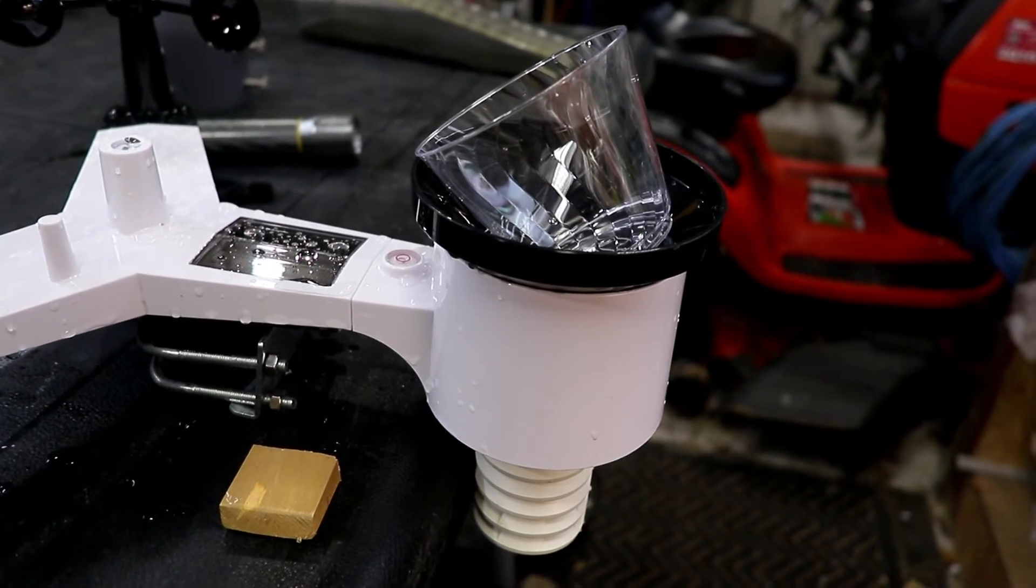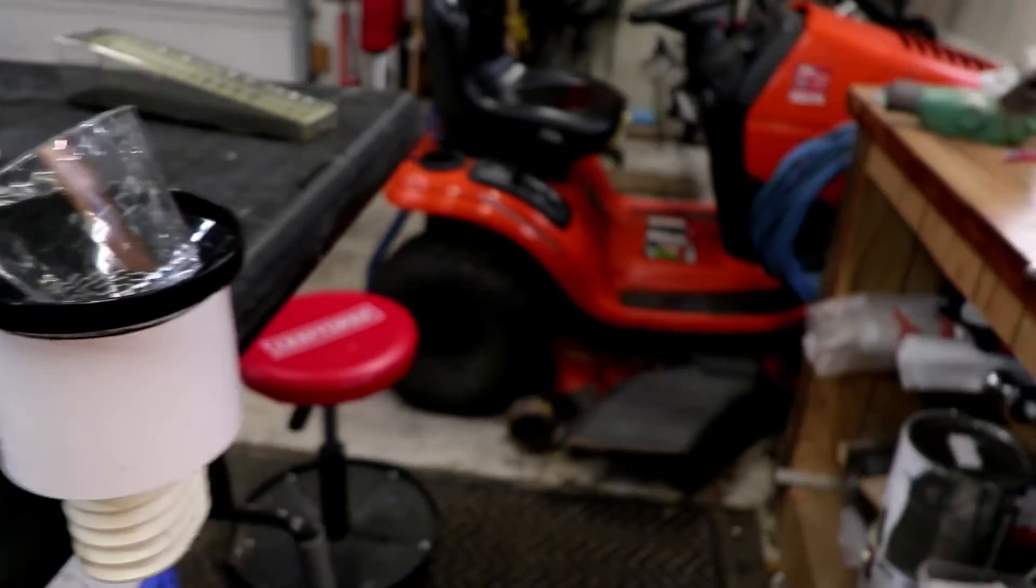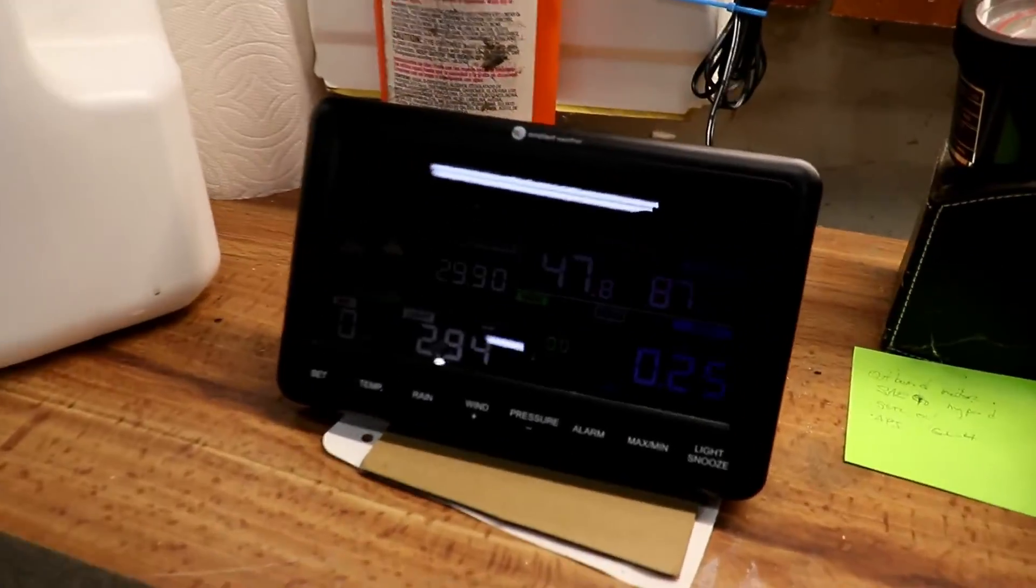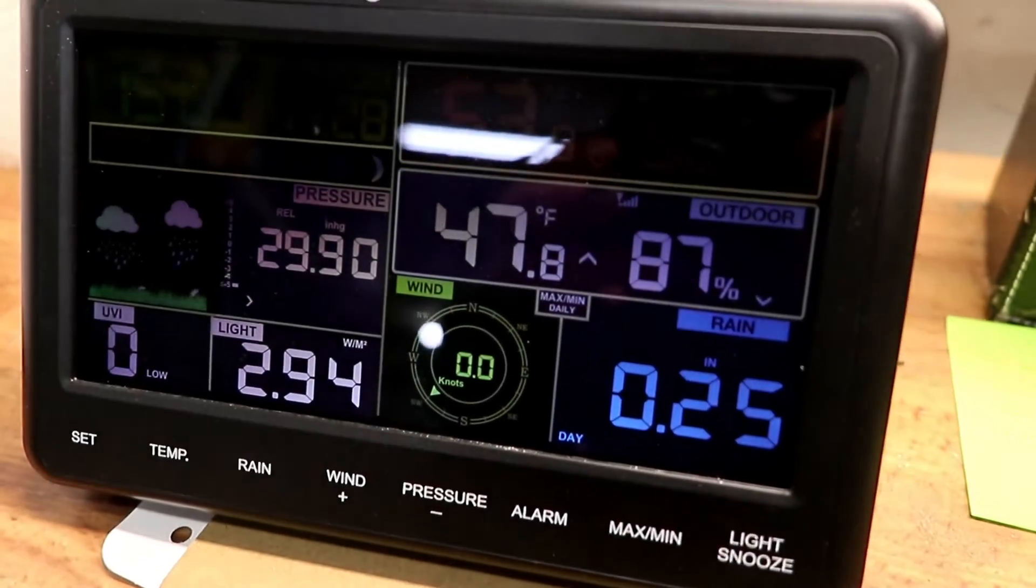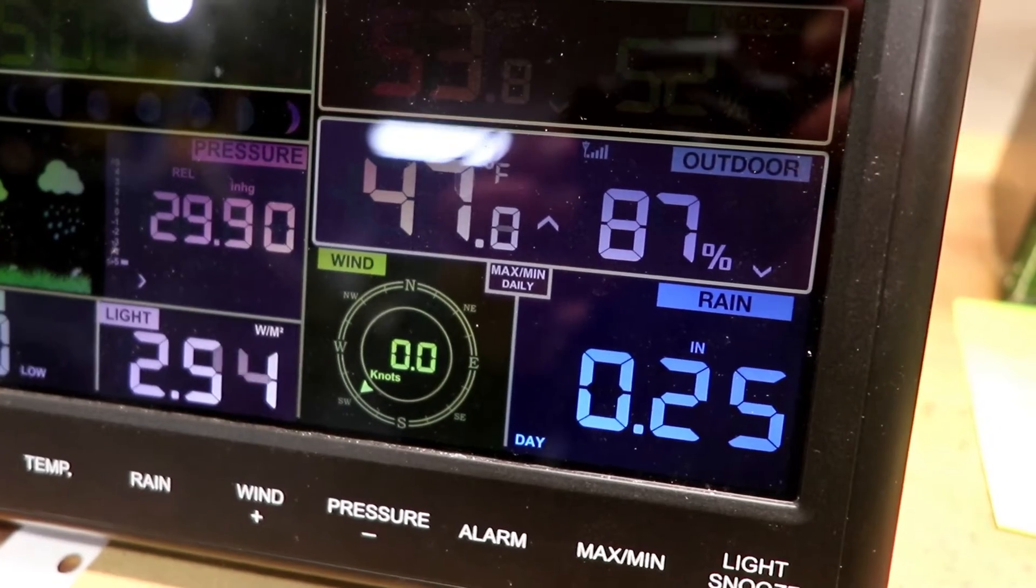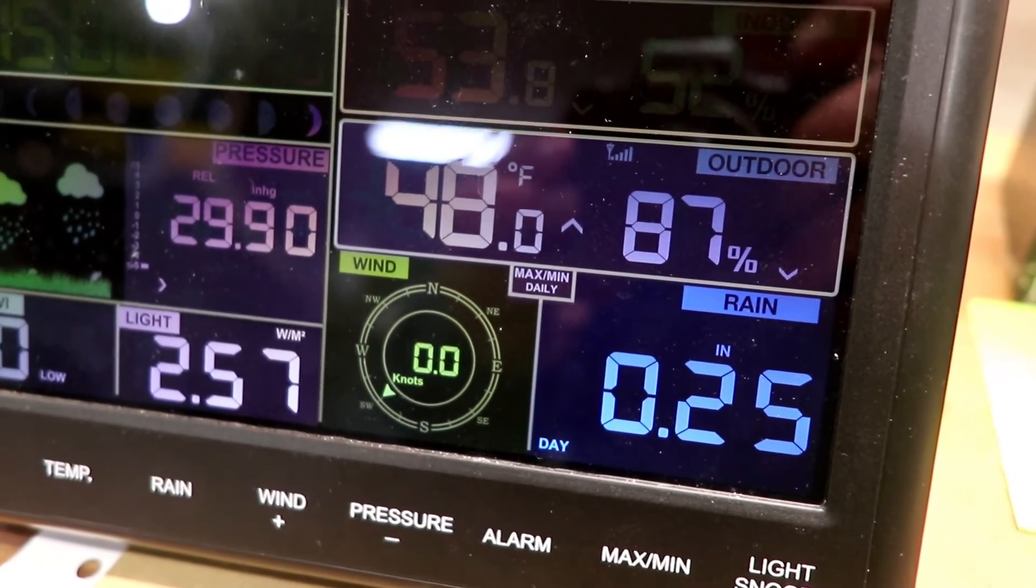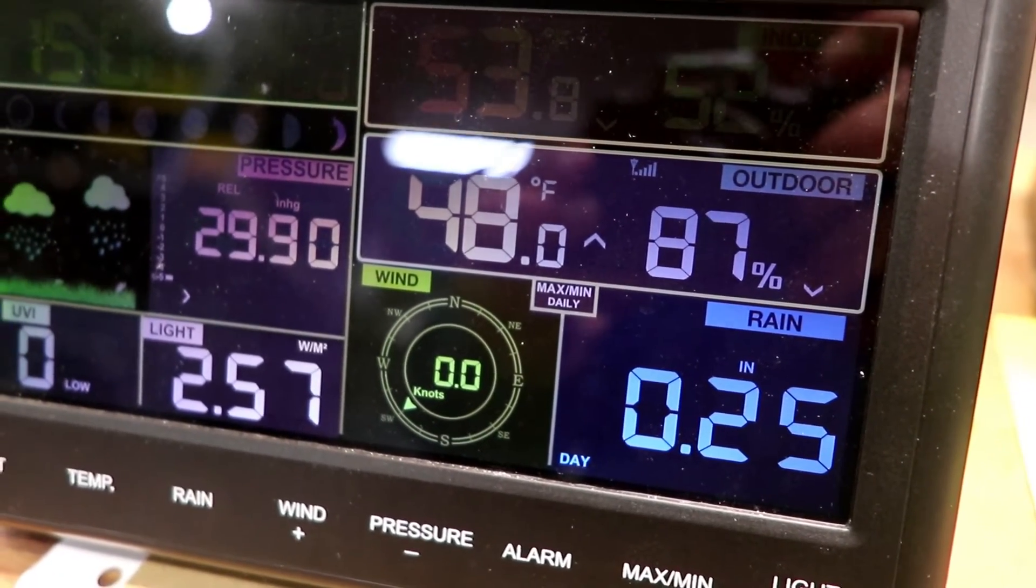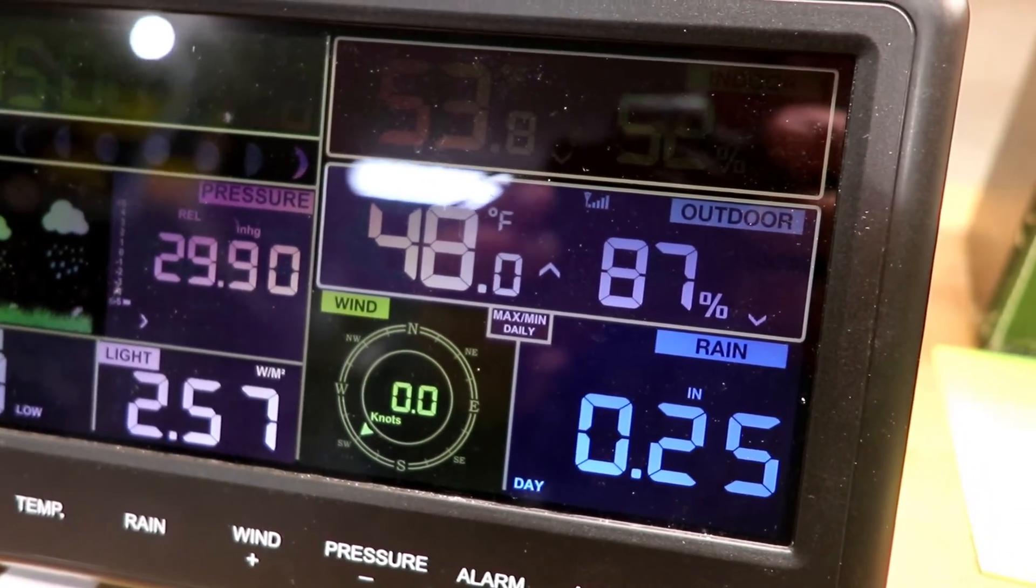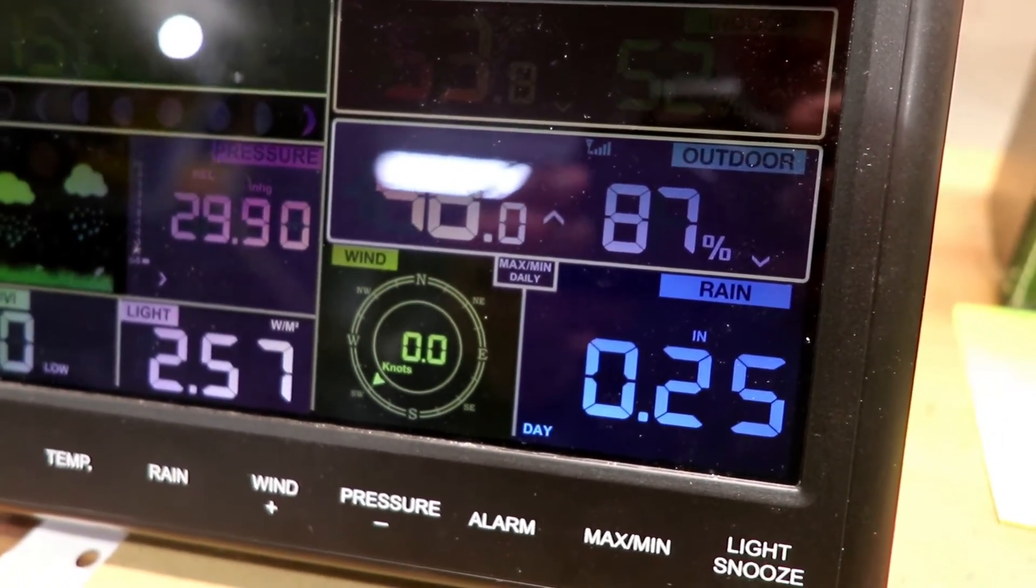Sure enough, it came up with 0.25 inches of rain. So that confirms that this rain gauge is calibrated properly, and I can believe the volumes that I get recorded on this machine.